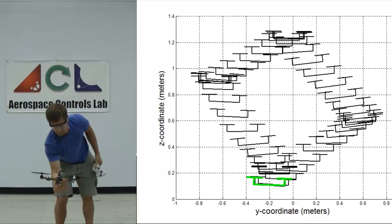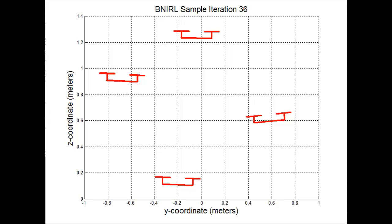The Bayesian nonparametric IRL algorithm converges to a posterior within 50 iterations, containing subgoals at each of the four corners of the trajectory.